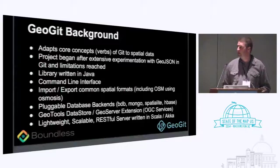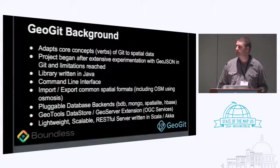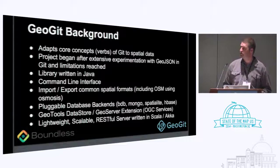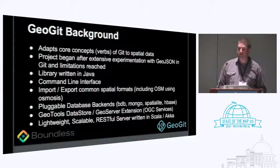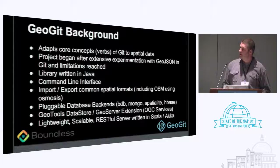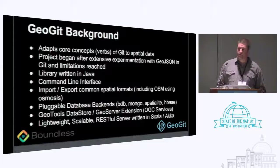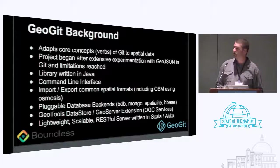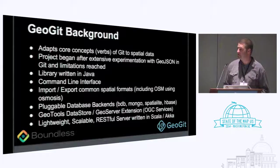What we've basically done is adapted the core concepts or verbs of Git to work with spatial data. The project began after we did a lot of experimentation with GeoJSON in Git. We started on GeoGit and the library is written in Java. There's a command line interface and it can import and export common spatial formats, including OSM, using Osmosis.